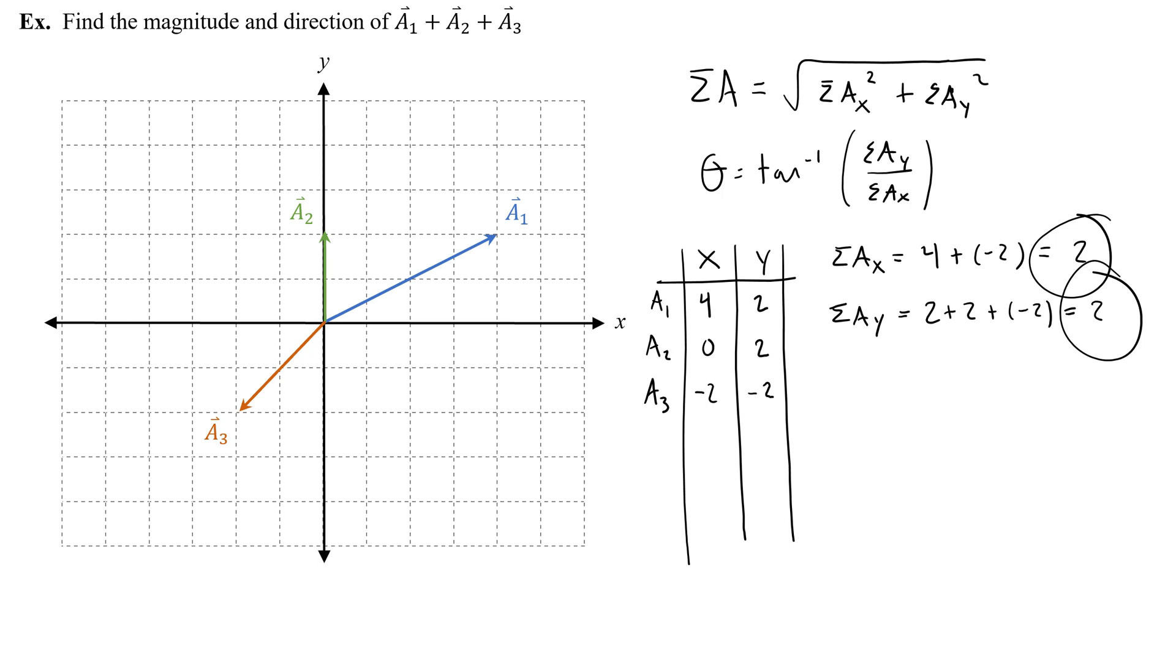And just to check, if I add all these vectors head to tail, so here's a2 and then a3 would go down like this. If I add them head to tail, I should get a sum, a vector sum sigma a, that has 2 for an x, check, and 2 for a y, check. So again, I didn't have to draw this head to tail graphically. I just can make a chart and solve it. And it will tell me without doing the head to tail method that yeah, my net of these vectors is going to be at 2, 2. Positive 2 and positive 2.